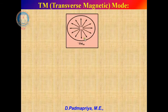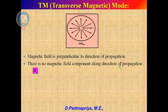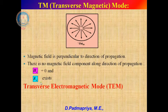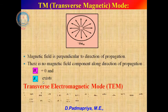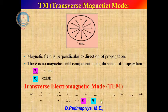Next is transverse magnetic mode (TM): the magnetic field is transverse to the direction of propagation while the electric field is normal to it. There is no magnetic field component along the direction of propagation, so Hz = 0 and Ez exists. The suffix shows the number of half-cycle sinusoidal variations. In transverse electromagnetic mode (TEM), both electric and magnetic fields are transverse to the direction of travel, so both Ez and Hz equal zero.